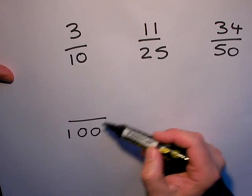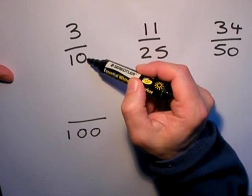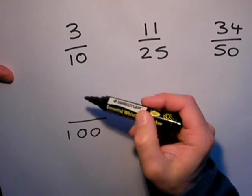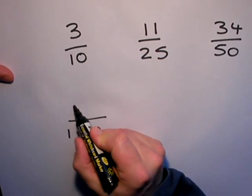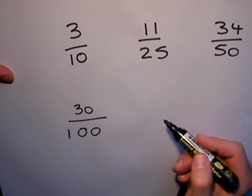10 times 10 gives me 100, and multiply the top number by 10 as well, I get 30. So that's 30 out of 100, which is 30%. Percent of course is out of 100, so 30% or 0.3.